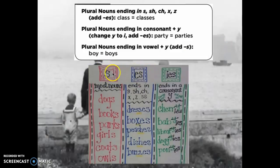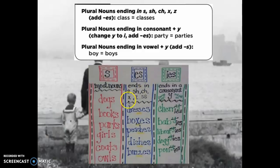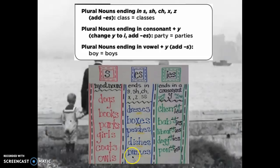Let's look at the anchor chart. These are nouns that end in S and take ES — we use ES for nouns that end in S, SH, CH, X, and also Z and SS. So to make 'dress' plural you add ES, 'box' ends in X so you add ES, 'holding' ends in CH so you add ES, and 'buzz' has a Z so you add ES as well.